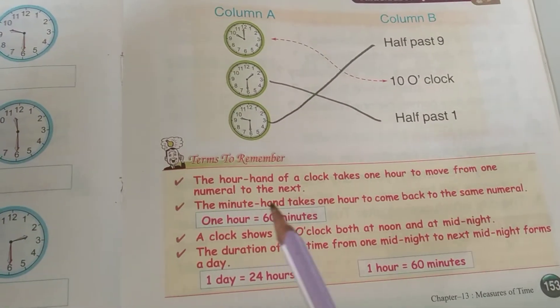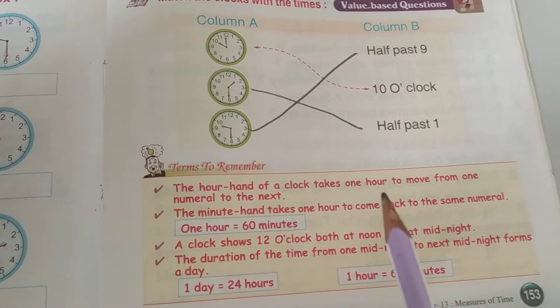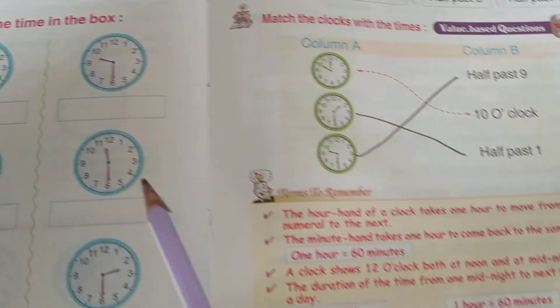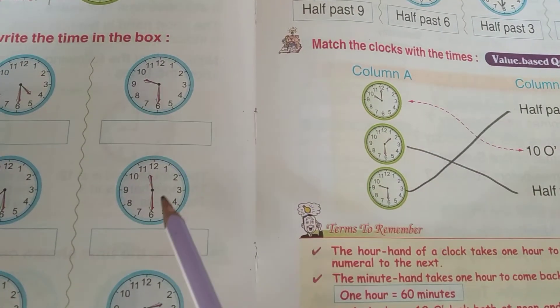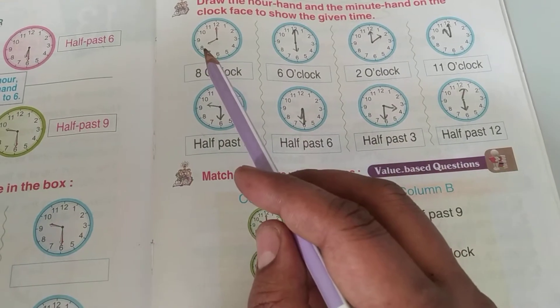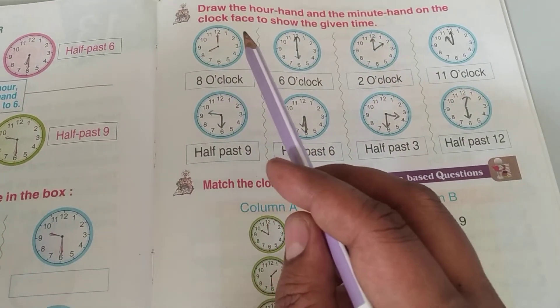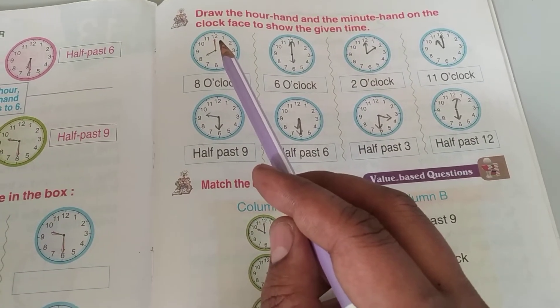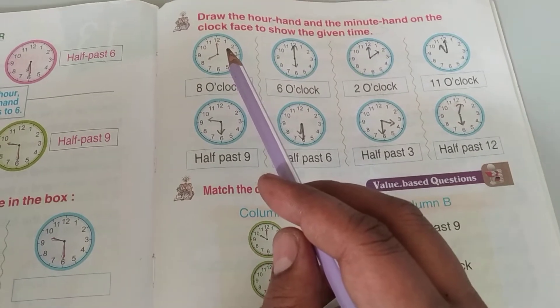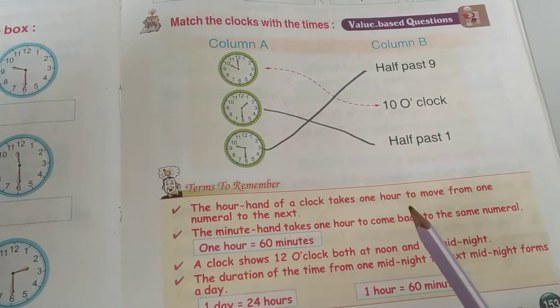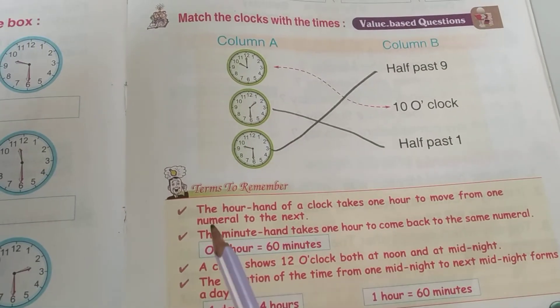Next, the hour hand of a clock takes one hour to move from one numeral to the next.